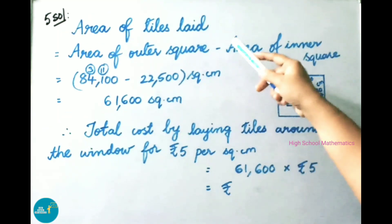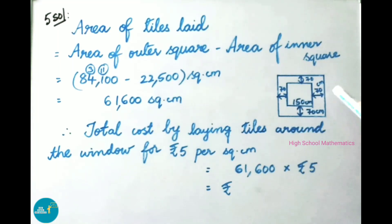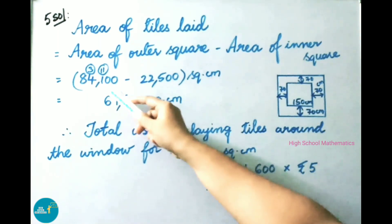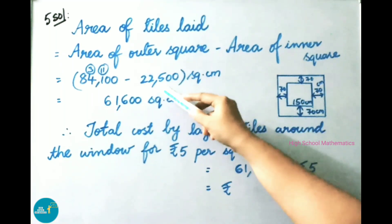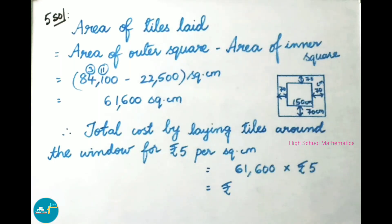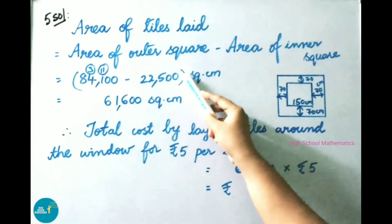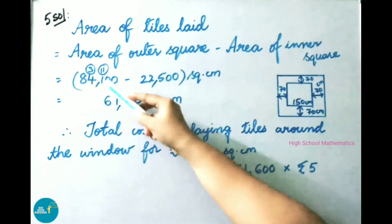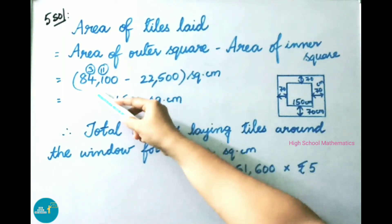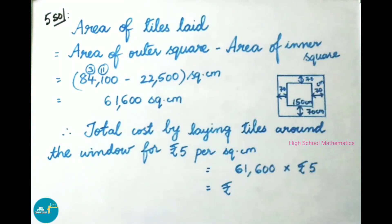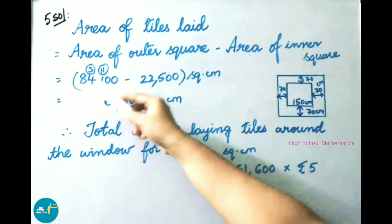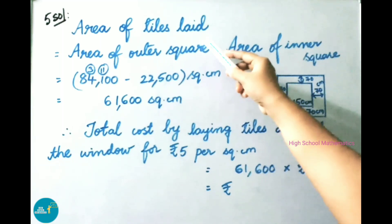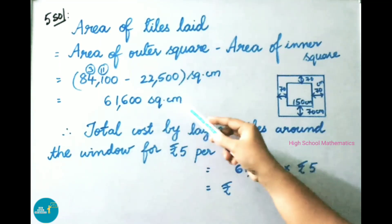Area of tiles laid equals area of outer square minus area of inner square. That is 84,100 square cm minus 22,500 square cm. Performing the subtraction: 84,100 minus 22,500 equals 61,600 square cm. So the area of tiles laid is 61,600 square cm.